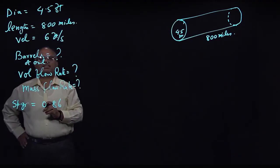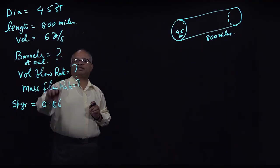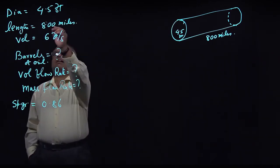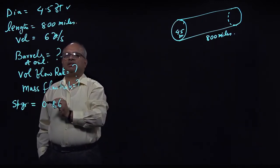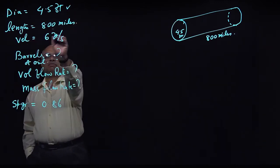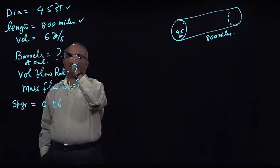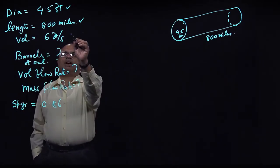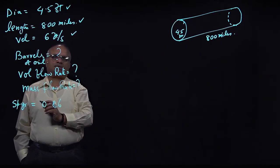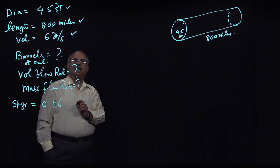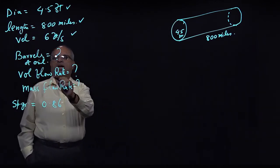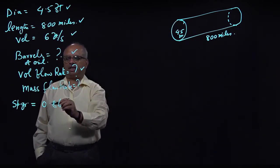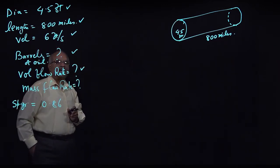This is a problem where we are trying to calculate the volumetric flow rate through the Alaskan pipeline. The pipeline is 4.5 feet in diameter, the length is 800 miles, and the velocity with which the crude oil is flowing is 6.0 feet per second. We need to calculate how many barrels of oil are flowing through, the volumetric flow rate, and also the mass flow rate.